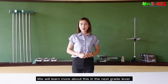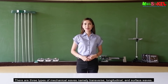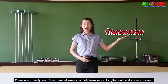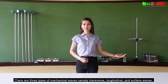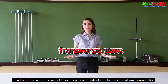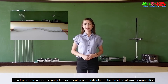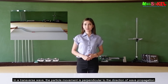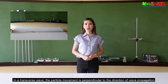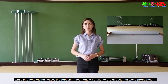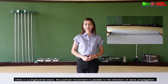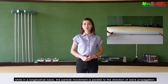We will learn more about electromagnetic waves in the next grade level. There are three types of mechanical waves: transverse, longitudinal, and surface waves. In a transverse wave, the particle movement is perpendicular to the direction of wave propagation. In a longitudinal wave, the particle movement is parallel to the direction of wave propagation.